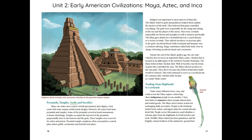Pyramids, Temples, Gods, and Sacrifice: Maya city-states were centers of both government and religion. Each center had some unique architectural designs; however, all centers had stone pyramids and temples. Some of the pyramids served as burial monuments to honor dead kings. Temples occupied the top level of the pyramids — purposefully close to the heavens and the gods. These temples were reserved for rulers and priests. Pyramid temple complexes often surrounded a central plaza where public ceremonies and festivals took place. Religion was important to most aspects of Maya life. The Maya's belief in gods and goddesses helped them explain the mystery of life itself. They believed that gods controlled everything. The gods were responsible for the rising and setting of the sun and the phases of the moon.